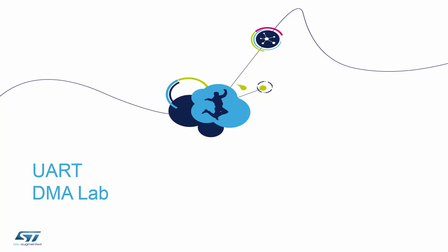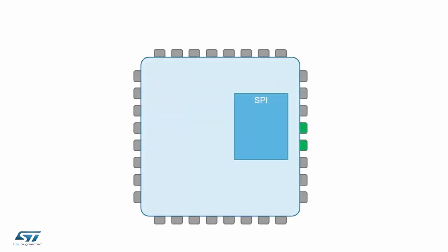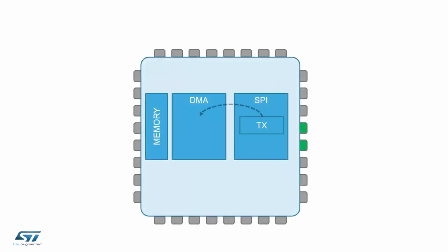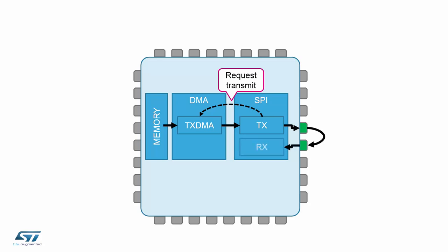We test the first approach: UART with polling mode, then UART with interrupt. Now we also test UART with DMA.